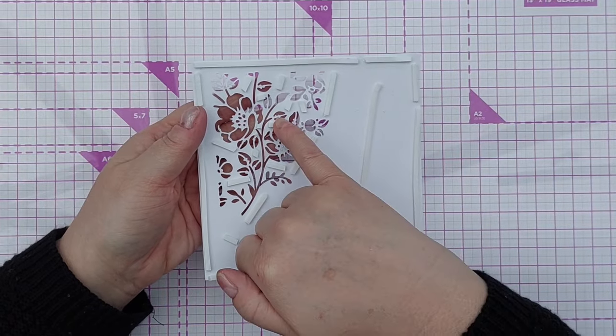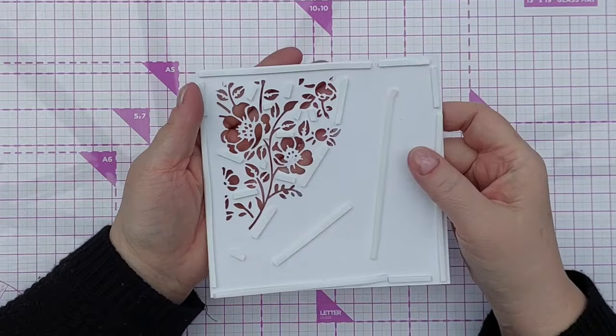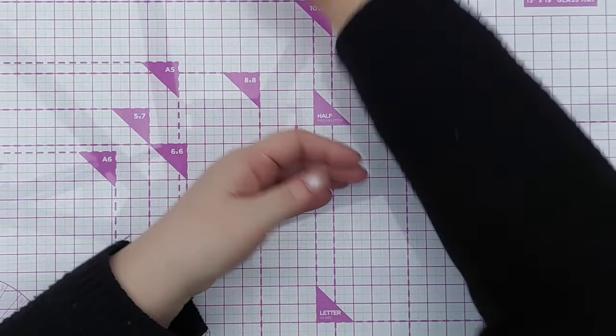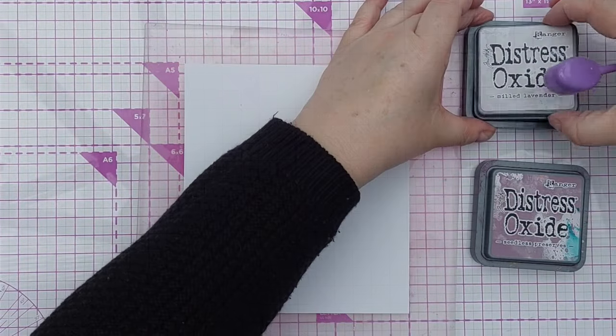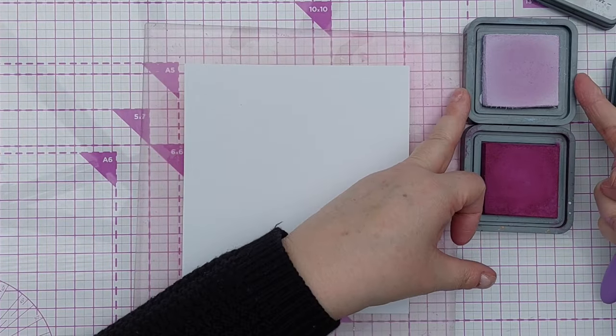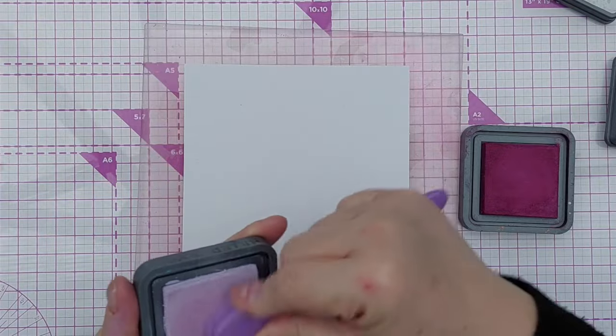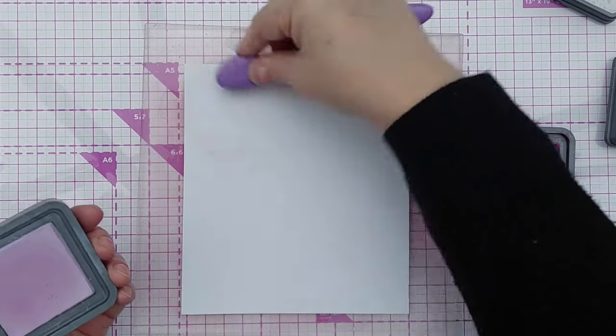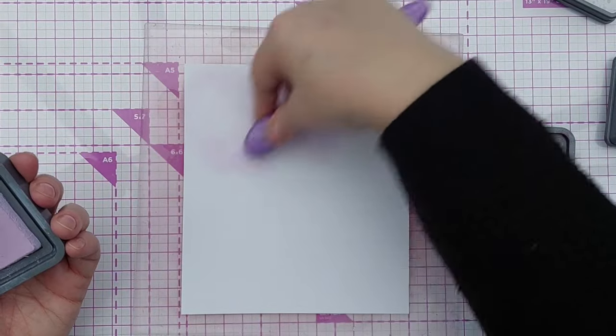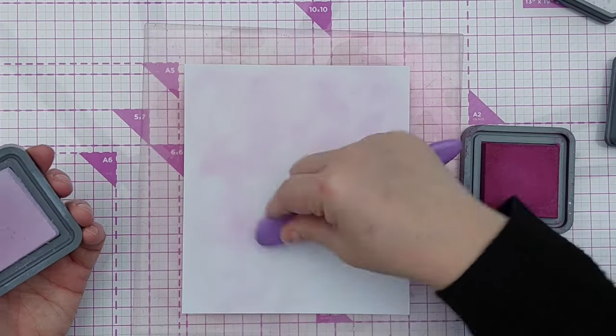I'm going to create for my magenta inks today. I'm going to use milled lavender and seedless preserves. To start with I'm just going to blend a light layer of milled lavender. It doesn't have to be perfect because this is going to be a blotchy mixed media background, so it's just to provide a bit of color in the background.